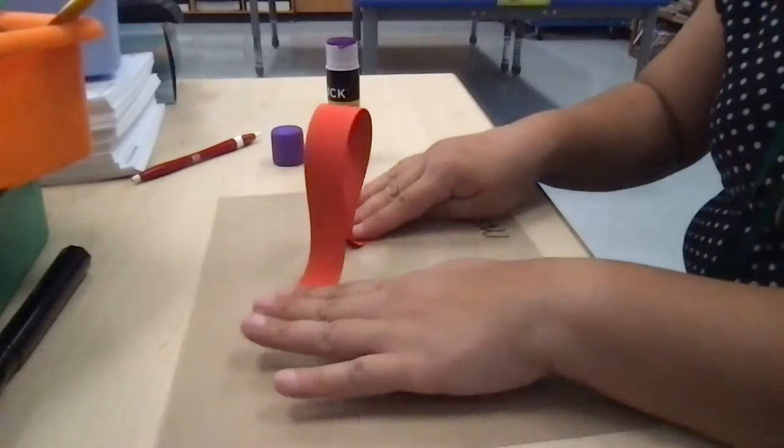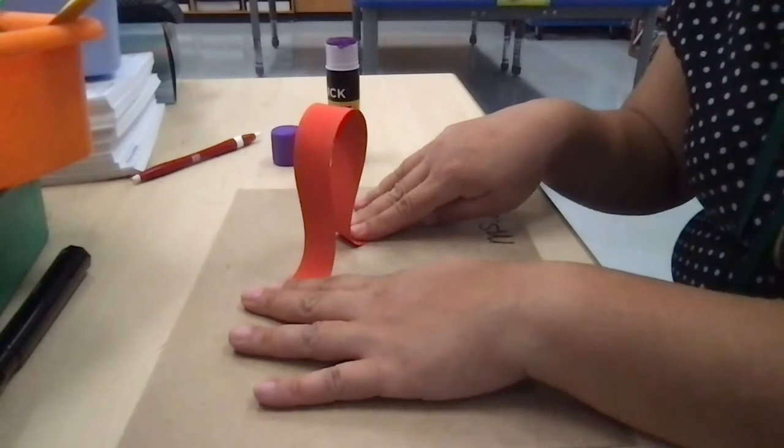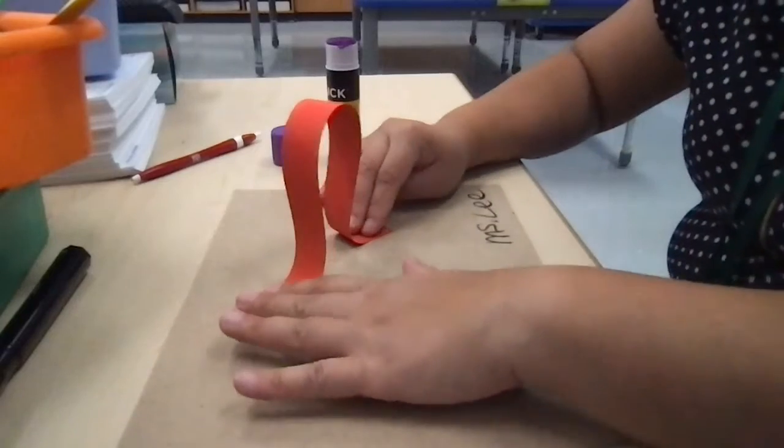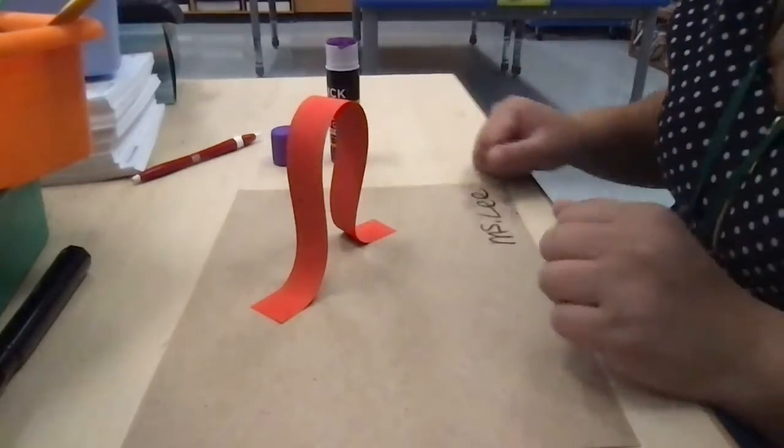Now that glue is still kind of wet so you might want to hold it down for a couple of seconds, like 10 seconds. One, two, three, four, five, six, seven, eight, nine, ten. That should be good and secure.